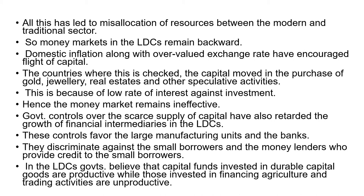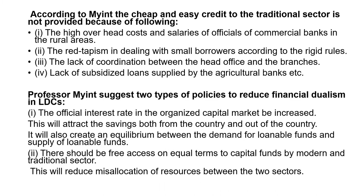Government controls over the scarce capital supply have also retarded the growth of financial intermediaries in least developed countries, favoring large manufacturing units and banks while discriminating against small borrowers and money lenders who provide credit to those in the agriculture sector. Governments in LDCs believe that capital funds invested in durable capital goods are productive, while investment in financing the agriculture sector is considered unproductive. Cheap and easy credit is not given to the traditional sector, and Professor Min identified several reasons for this: high overhead costs and salaries of commercial bank branches in rural areas, red-tapism in dealing with small borrowers under rigid rules, lack of coordination between head offices and branches, and lack of subsidies from agricultural banks.